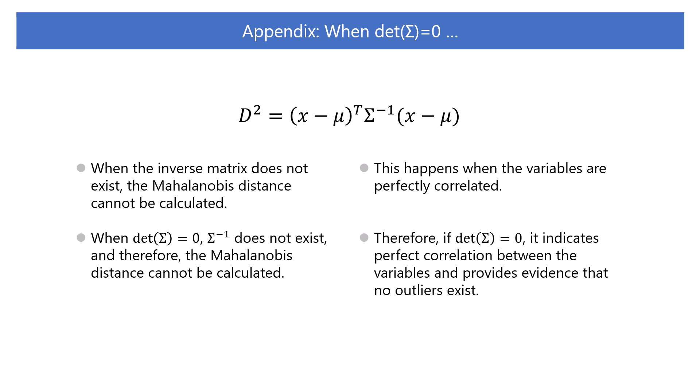This happens when the variables are perfectly correlated. In multivariate outlier detection, perfect correlation between variables means that there are no significantly deviated outliers. Therefore, if the determinant of the covariance matrix is zero, it indicates perfect correlation between the variables and provides evidence that no outliers exist. Thus, the fact that the covariance matrix does not have an inverse is not a problem — rather, it can be used as evidence that no outliers exist.